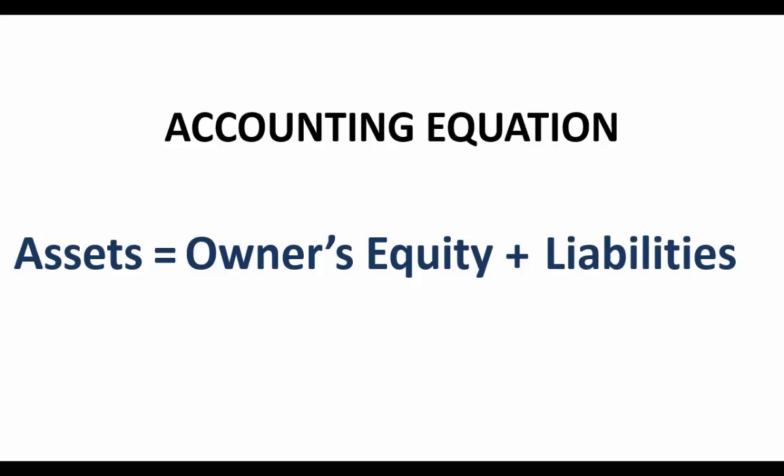Let's look at our first element of the accounting equation: our assets. What is an asset? An asset is something that you own — something that is yours, that you can sell, something that is money or something that can become money; in other words, it can be converted into cash. You can only convert your own car into cash, so you have to own it.